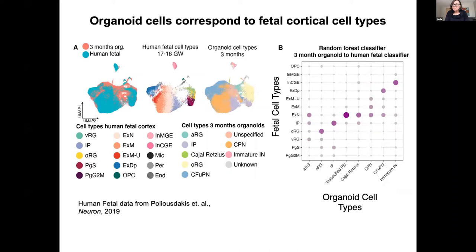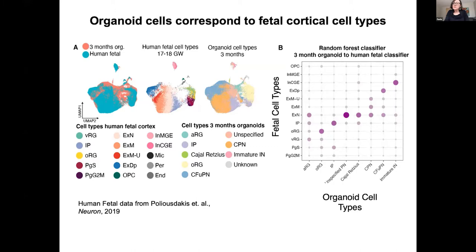How similar is corticogenesis in vitro to what happens in the embryo in vivo? Amanda and Anna took a dataset published by Dan Geschwind, trained a random forest classifier on cells from the actual fetal developing cortex, and then let the classifier identify matching cells in the organoid and vice versa. They also looked at differential gene expression signatures defining different populations in vitro and in vivo. There is a high level of reliability between the identity of cells made in vitro and in vivo in these culture conditions, including analysis of metabolic states.